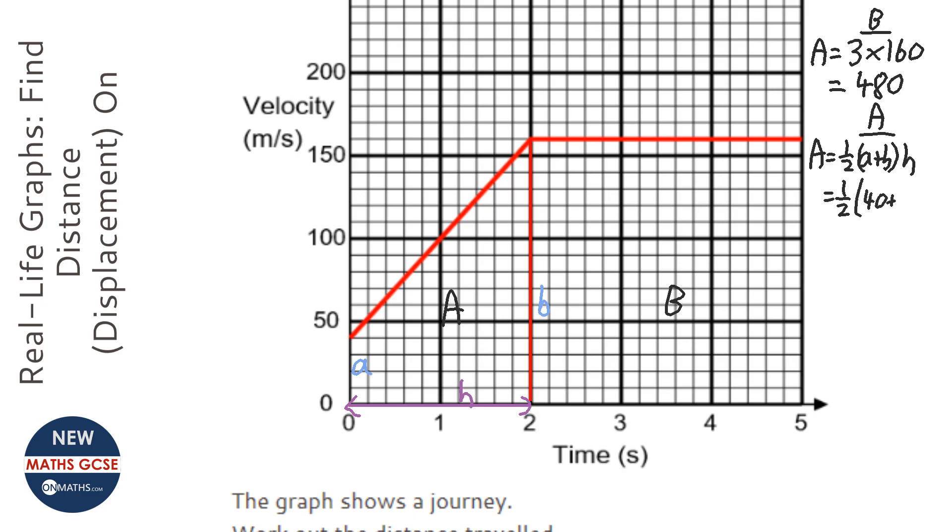So that's 40 plus 160, and then times h, which is 2. You can see there the half and the times 2 cancel each other out, and so it's 40 plus 160, which is 200.